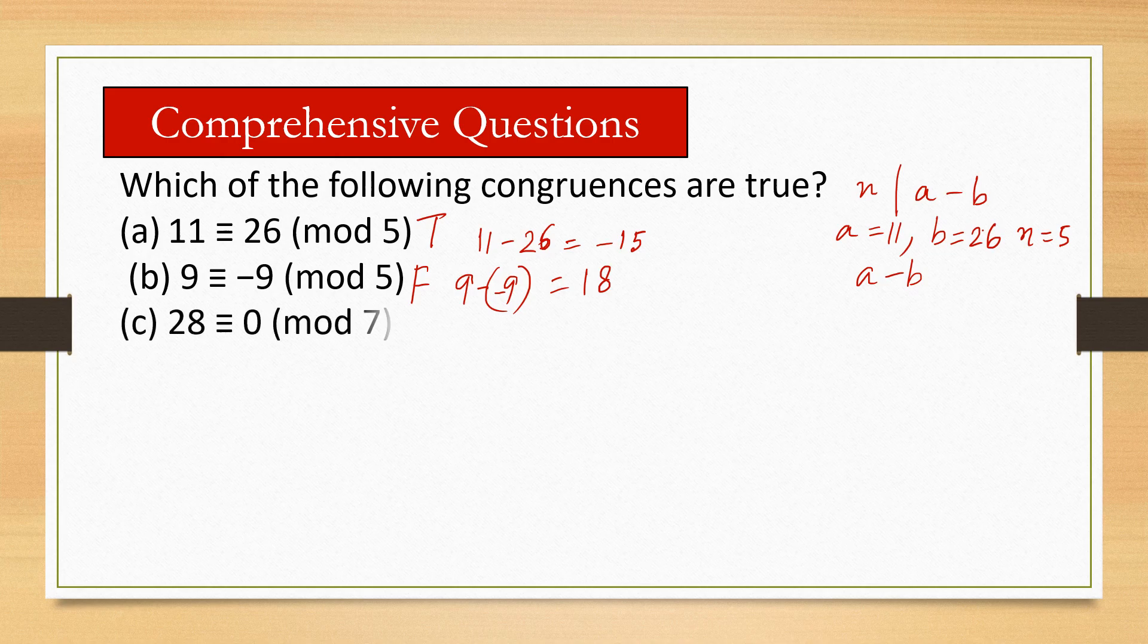Next: (c) 28 ≡ 0 (mod 7). Yes, 28 minus 0 is divisible by 7, so it is true.